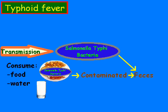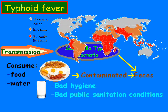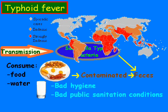So you have a couple of factors here: bad hygiene and bad public sanitary conditions. If you notice, I have a map of different countries and how typhoid fever affects them. Some countries are worse than others, but typically the countries with bad problems have poor public sanitation conditions, while the countries without a problem with salmonella typhi bacteria have good sanitation conditions.